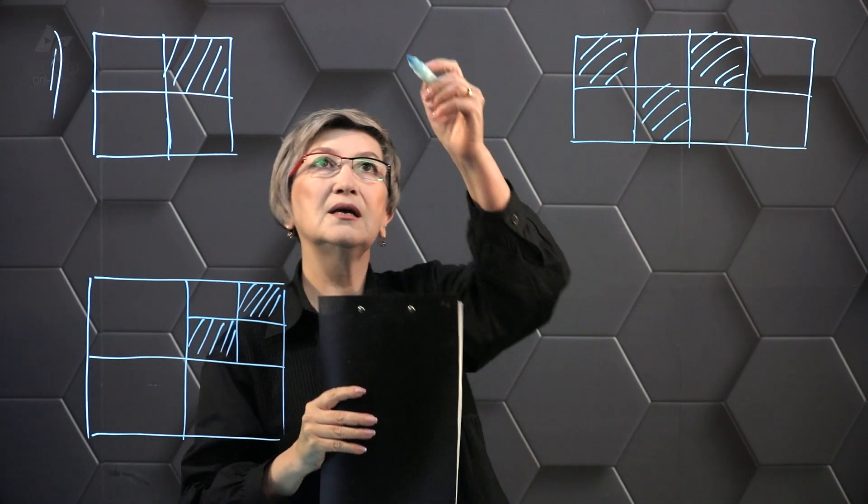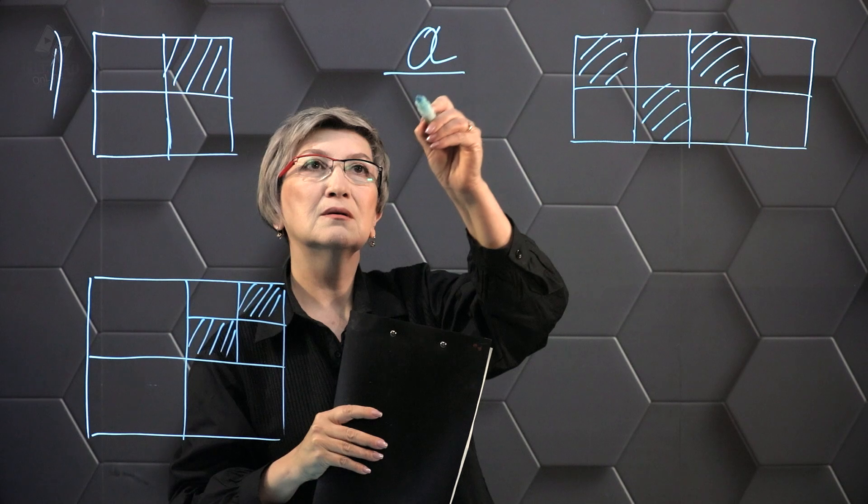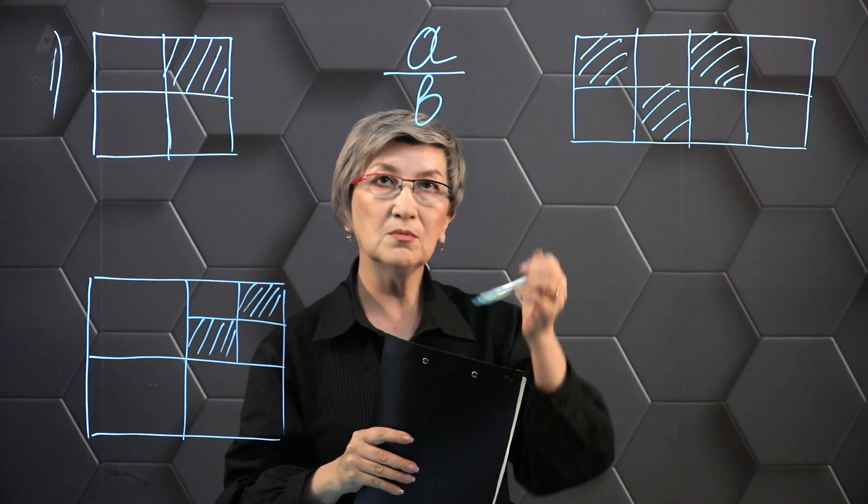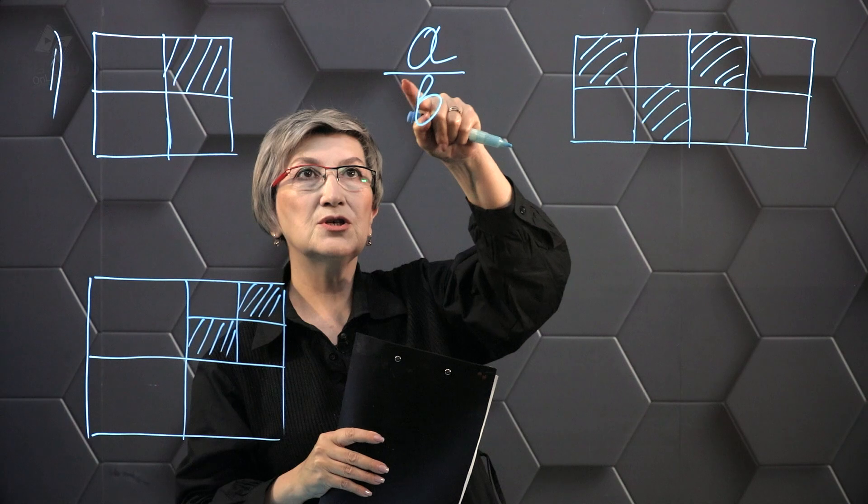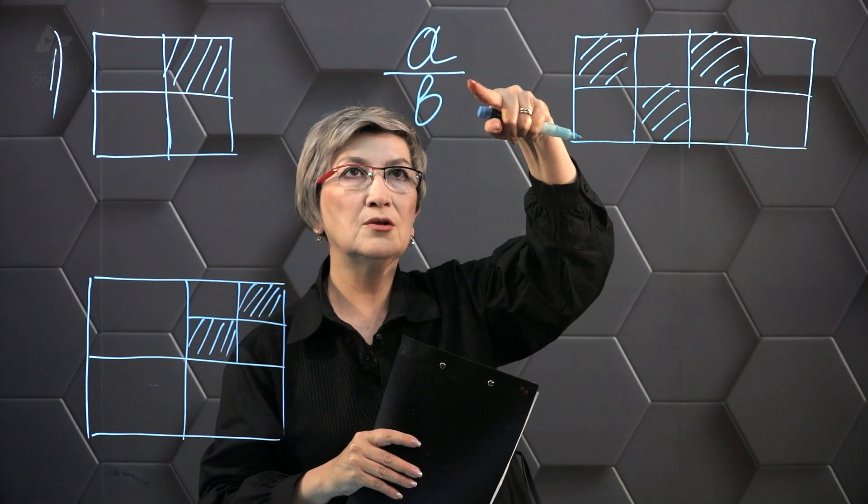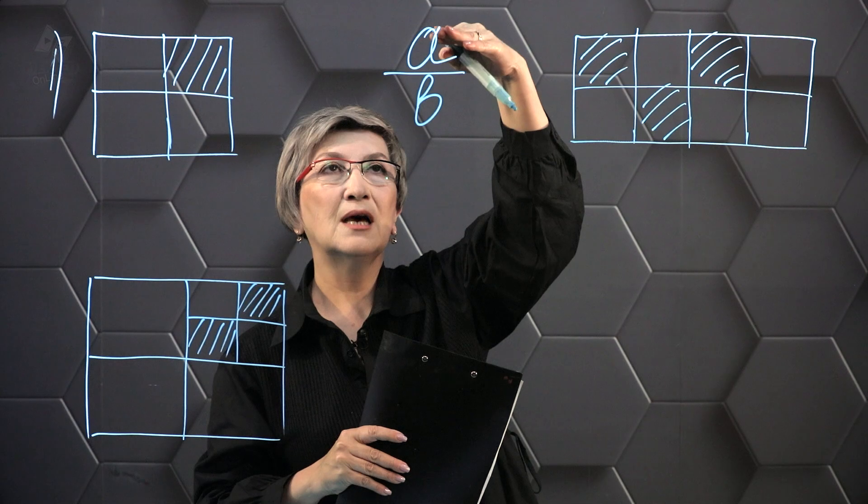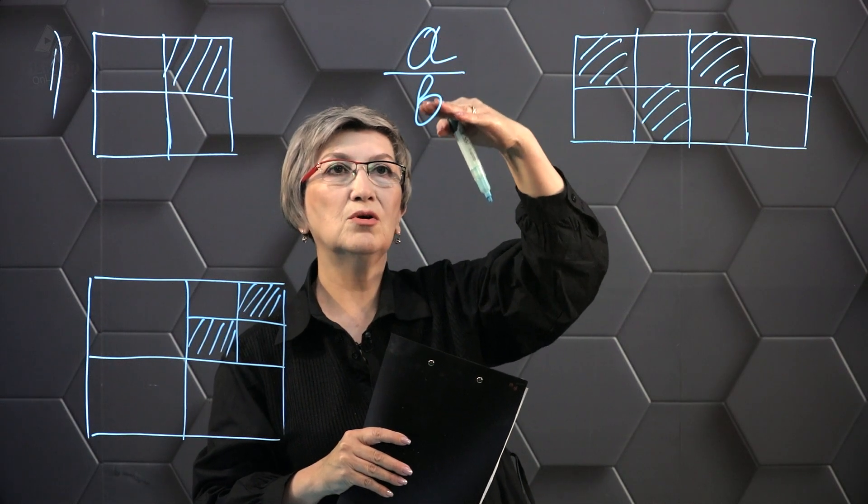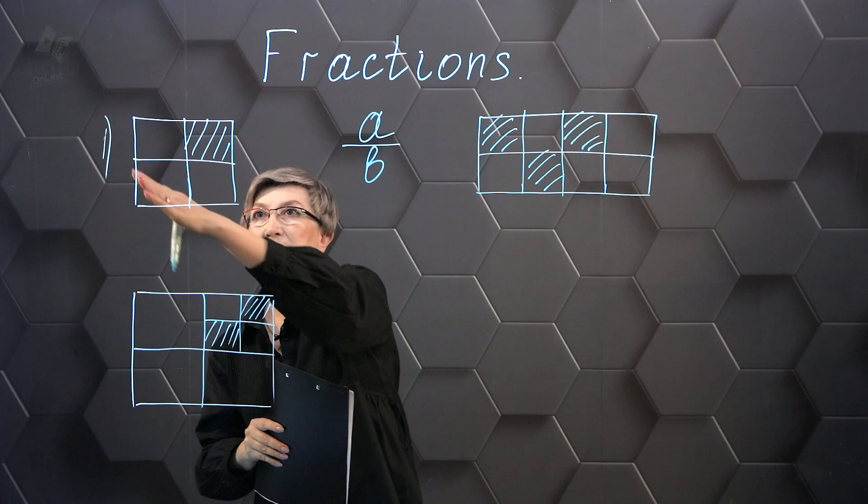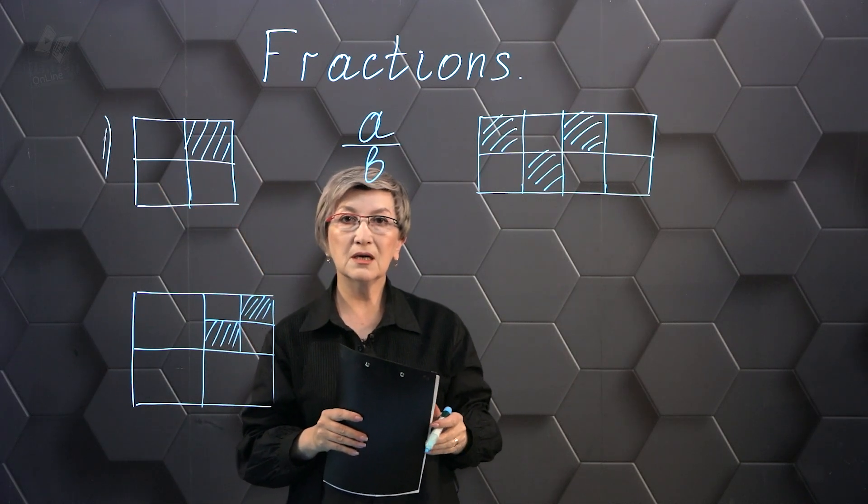Let's remember that fractional numbers have the following form. A divided by B, we've talked about the fact that fractional numbers contain a fractional line, a number above the fraction line, and a number below the fraction line. In order to write the fraction, we must use this notation.